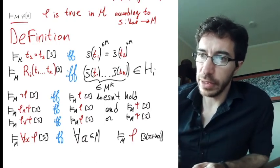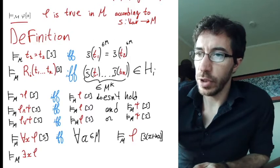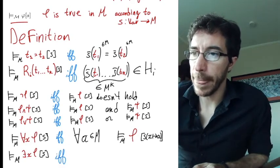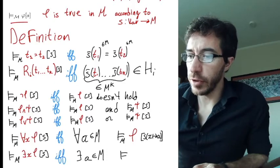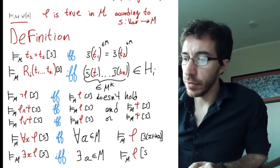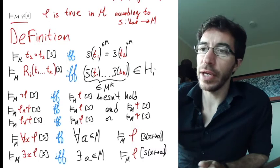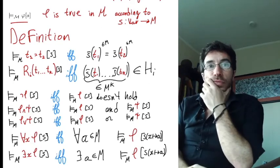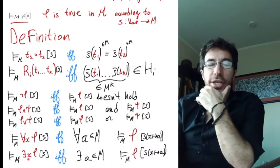Finally, we need to define what it means for an existential formula ∃x φ to be true — which I'm hoping you can guess by now. There exists some element a in our domain such that the formula φ is true according to the variable assignment where x is assigned to that element a. It's saying there is a way to assign the variable x to an element so that the formula becomes true. There is something in M that, if you plug it in for x, makes it true.